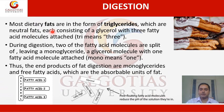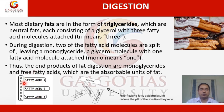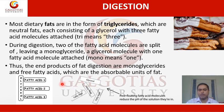Most dietary fats are in the form of triglycerides, which are natural fat molecules consisting of a glycerol molecule attached to three fatty acid molecules. During digestion, two of the fatty acid molecules are split off, leaving a monoglyceride — a glycerol molecule with one fatty acid attached. The end products of fat digestion are monoglycerides and free fatty acid molecules, which are the absorbable units for fat.